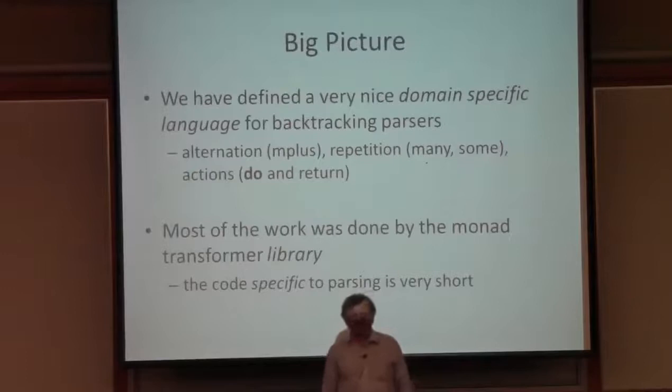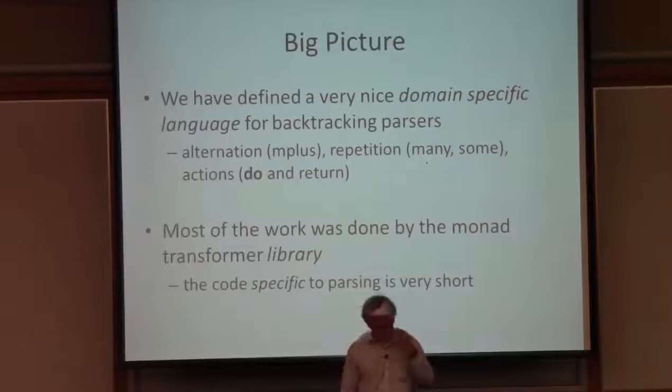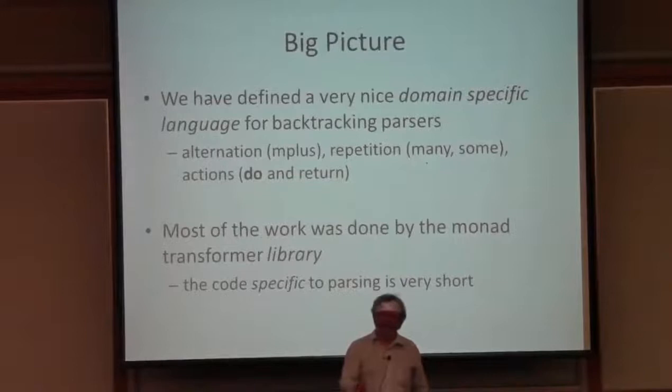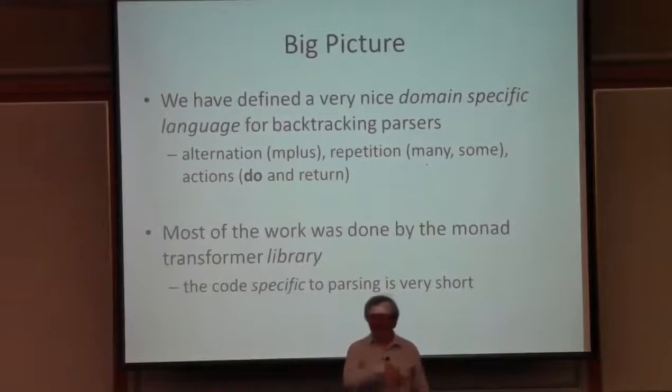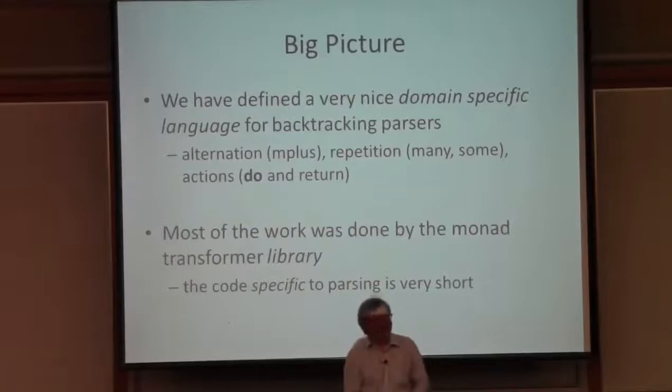What I have now is a very nice domain-specific language, in effect, for programming backtracking parsers. I can easily represent alternation, repetition, and actions that the parser should perform. And I had to do very little work that was not part of a monad transformer library. All of those monad transformers I showed you are library code, and the part specific to parsing is very short. That's the goal of programming with monad transformers: to get as much work as possible done by the monad transformer library.